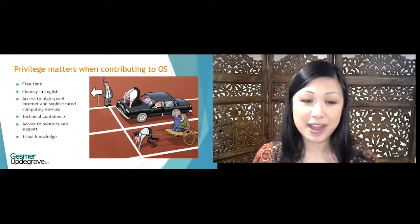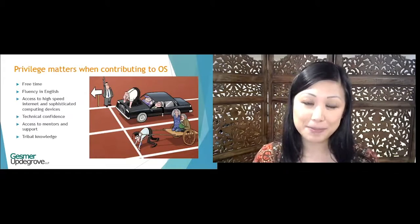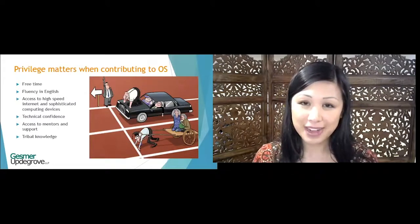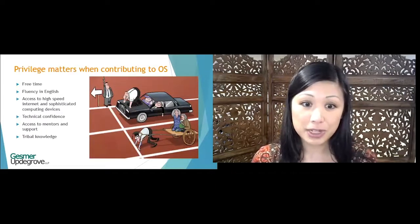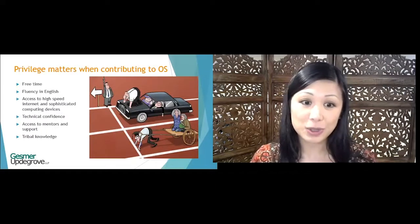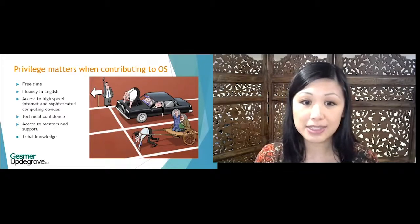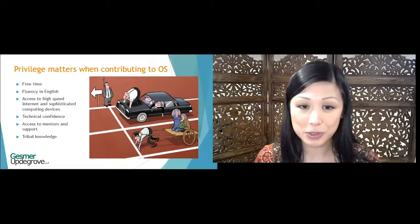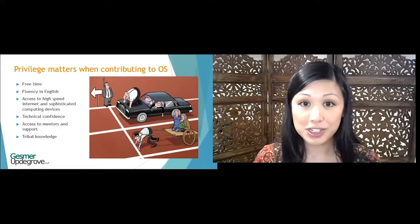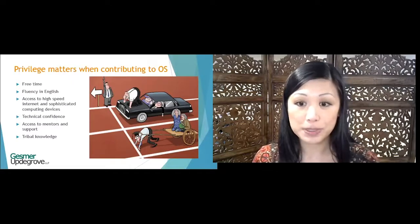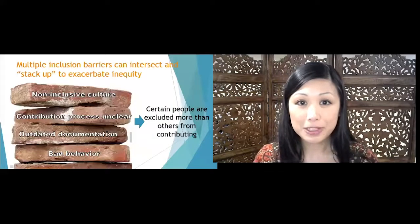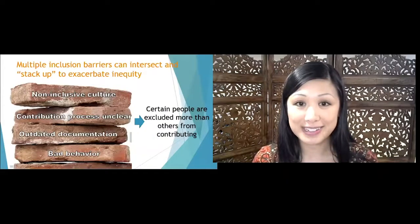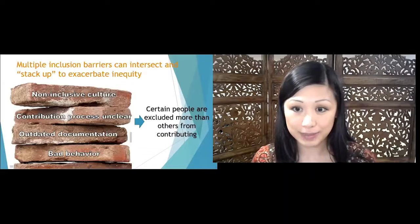Privileges such as having ample free time, being fluent in English, having access to reliable high-speed internet and expensive computing devices, having a high degree of technical confidence, and access to mentors and a support network already plugged into the open source community — these privileges make it easier for some groups of people to contribute than others. Multiple inclusion barriers can intersect and stack up to exacerbate inequity.